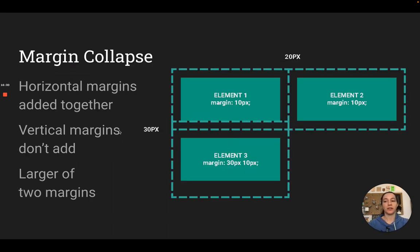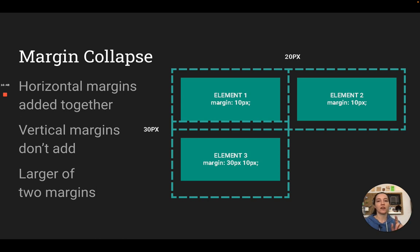Something I want to point out is margin collapse. When you're putting things with margins next to each other, if you have horizontal margins — the negative space between two elements on the left and the right — those will add up. So if this element has a margin of 10 on all sides and the one next to it also has a margin of 10, the distance between them will be 20. It adds the margin from each side, so you get the sum of those margins.